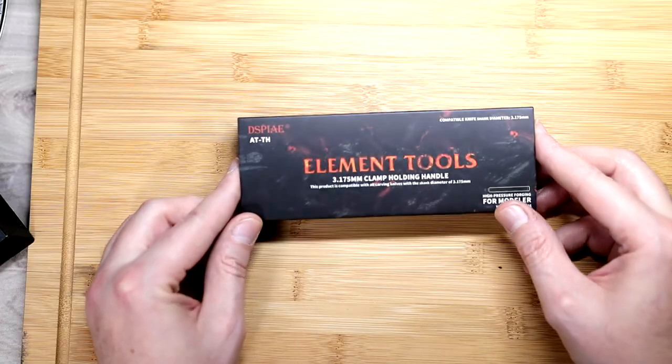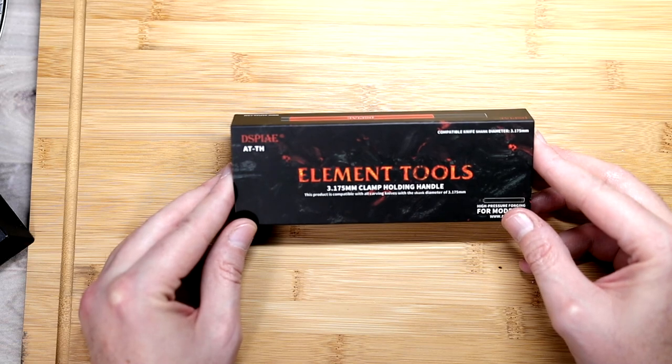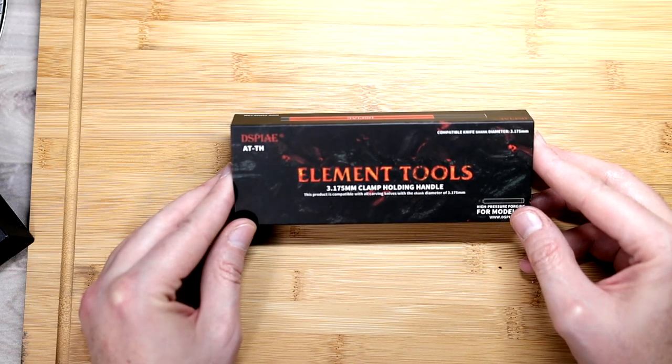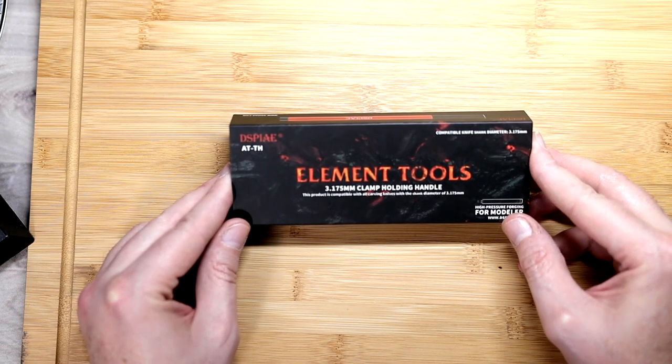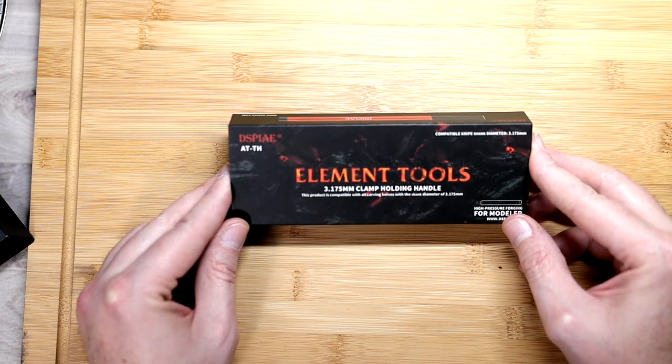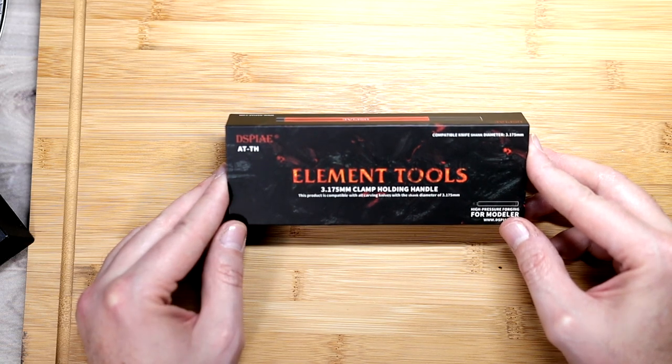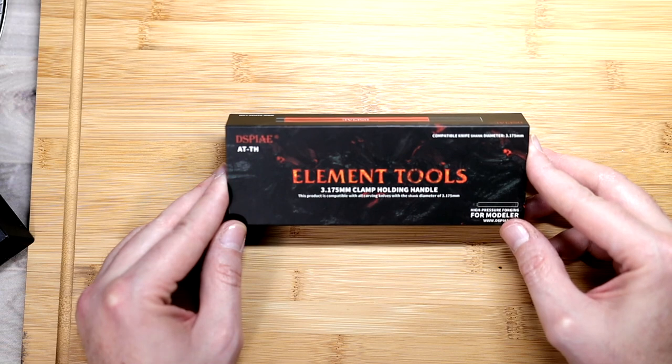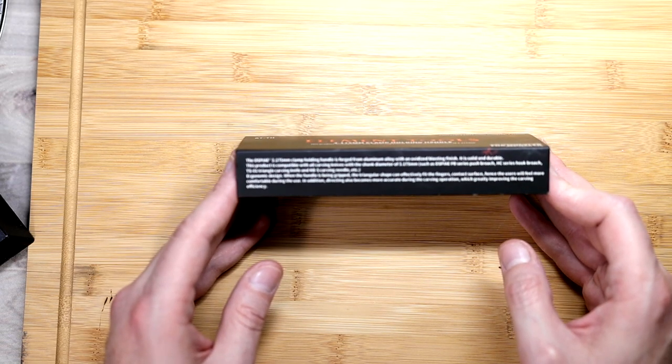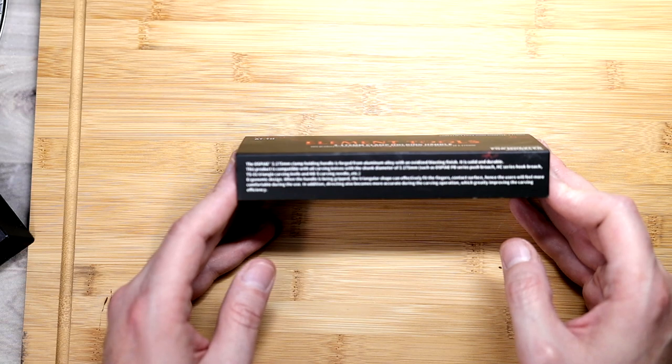Here we are with the Display AT-TH element tools 3.175 millimeter clamp holding handle. This product is compatible with all carving knives with the shank diameter of 3.175.